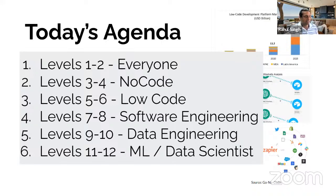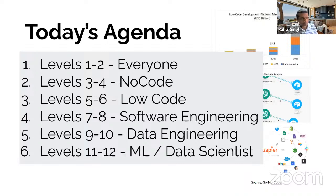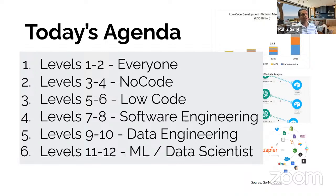There are essentially six sections. Levels one and two — everybody has access to what you can do. Levels three and four are for folks comfortable with no-code systems, app builders, and automation tools. Levels five and six are for folks that are comfortable with programming or want to learn — going one step beyond what no-code can do gives you a lot more speed. Levels seven and eight are for folks with a background in software engineering, which I know is a lot of people.